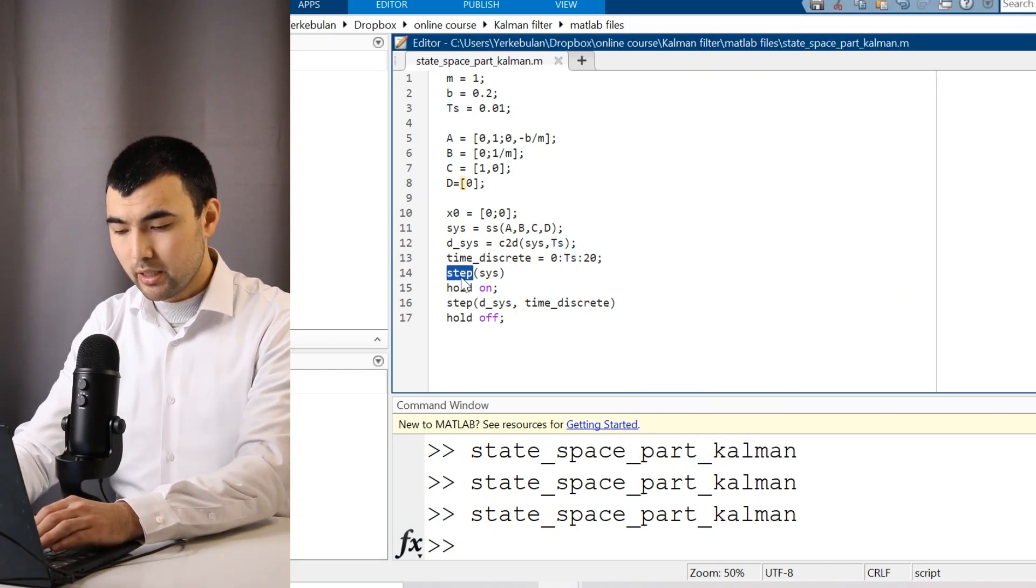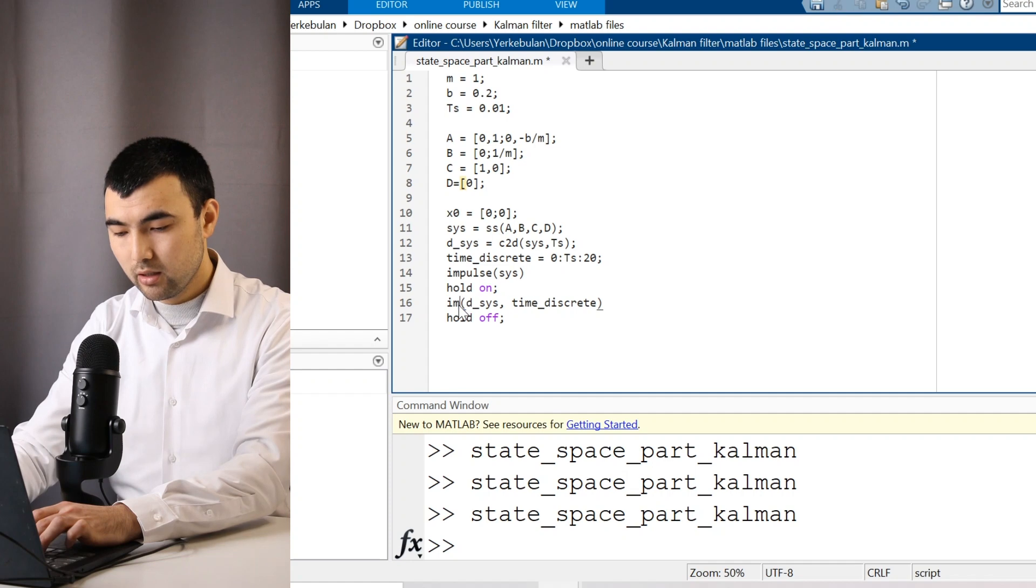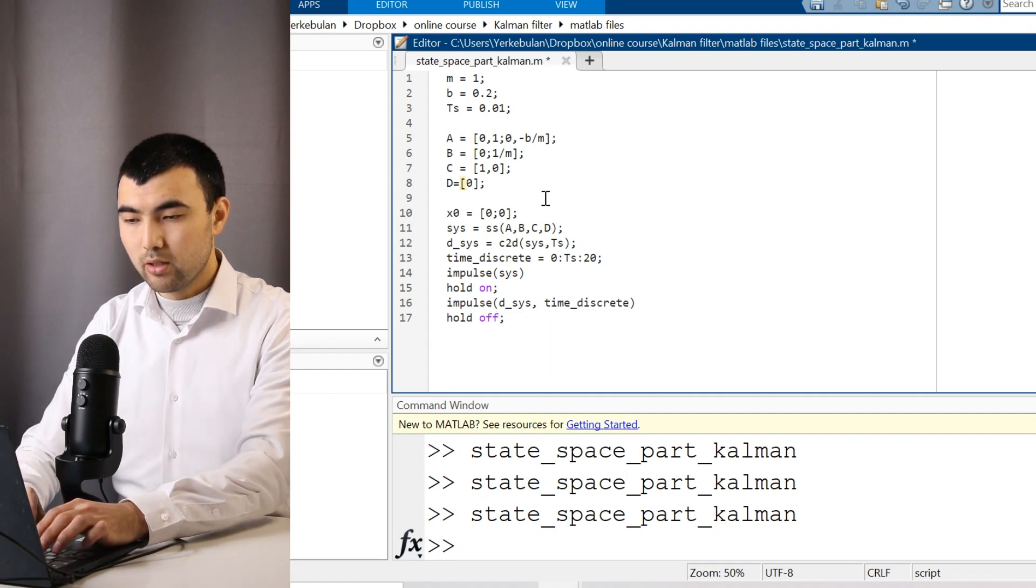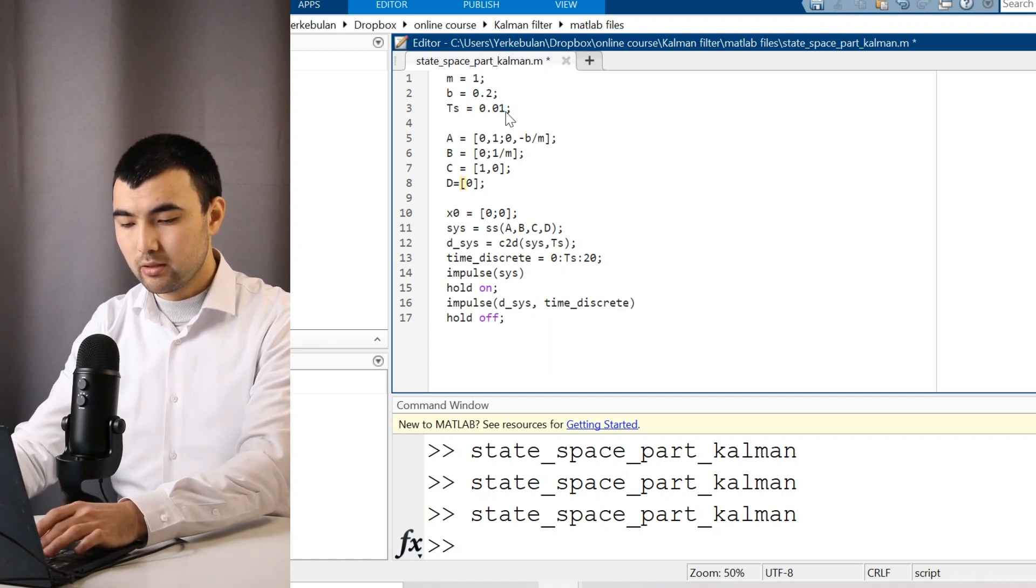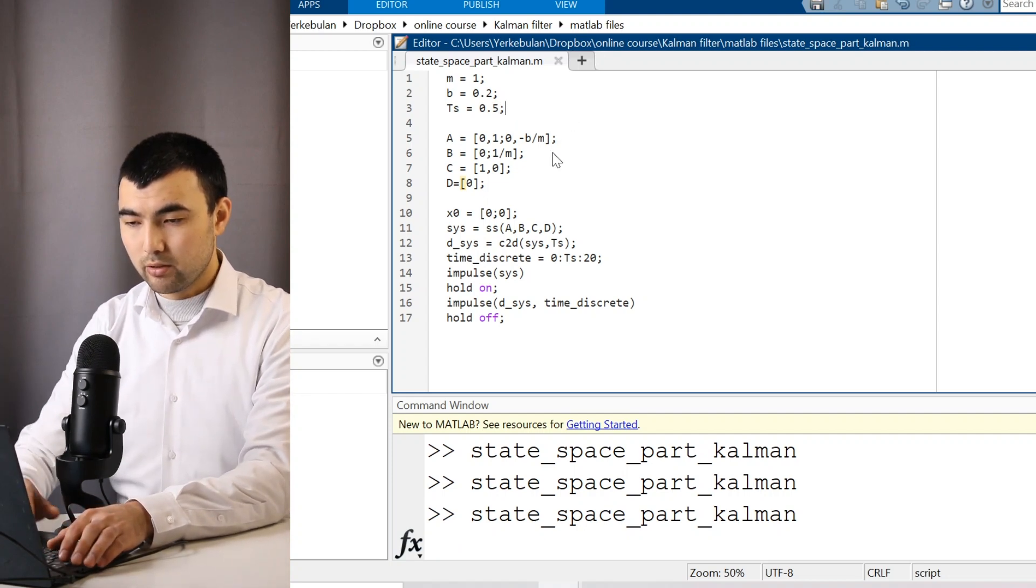So what this equation means is that the vehicle is going to continue moving because we constantly apply some force. Also, instead of step, I'm going to insert impulse again. And also, I'm going to increase the time period. So let me set 0.5 seconds and run this code.